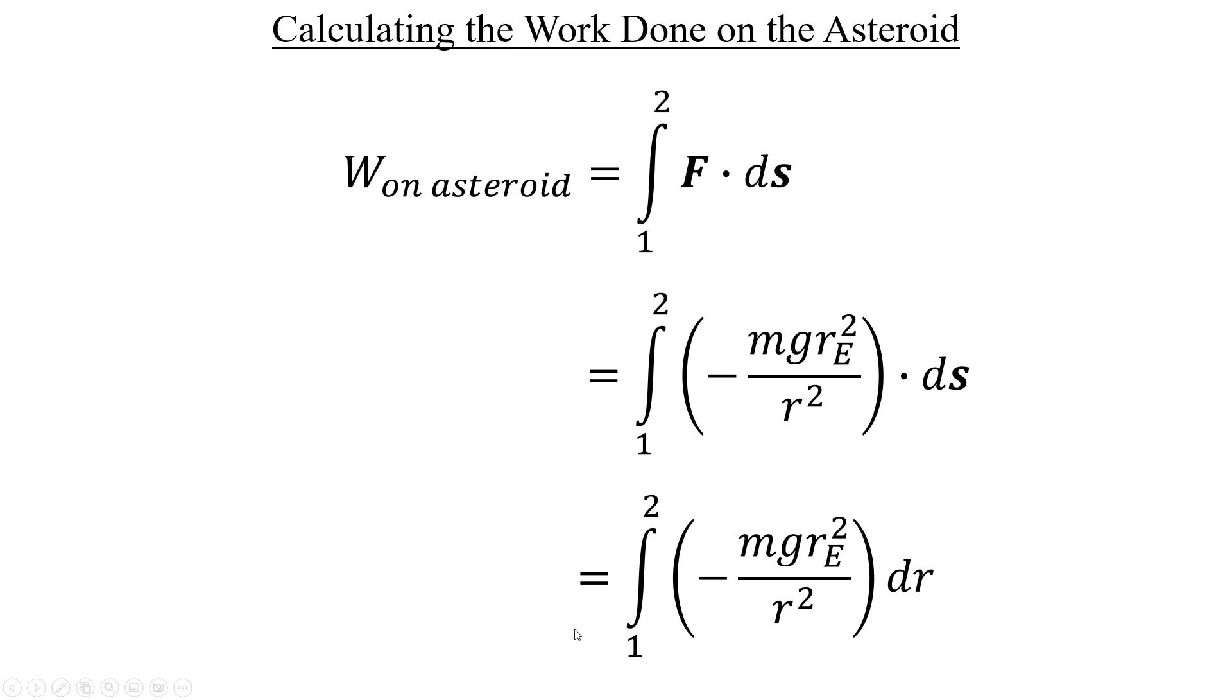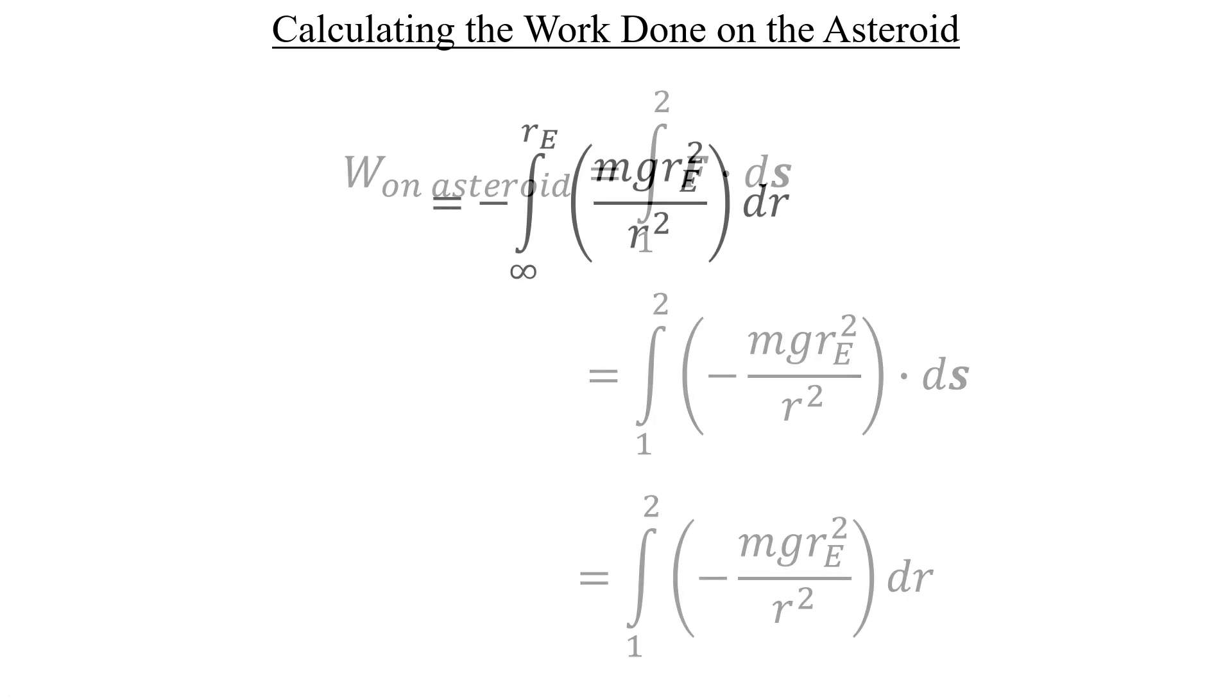we'll use the starting position of infinity to represent a great distance away that the asteroid starts from. And the final position will be at the surface of the Earth on its radius, like this.